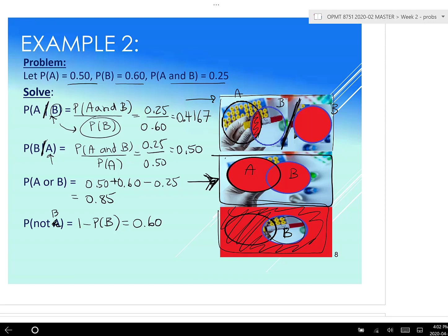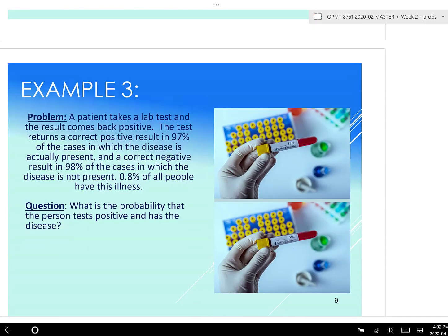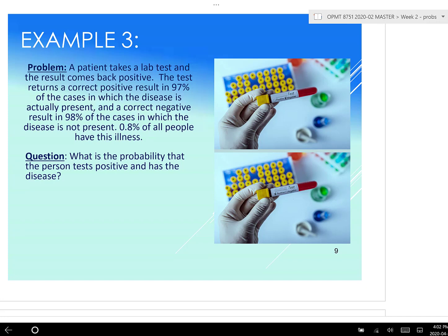Okay, next example here. Let's get into an applied example. So let's say we have the following: a patient takes a lab test here, and the test comes out positive. So the test returns a correct positive 97% of the time in which the disease is actually present.